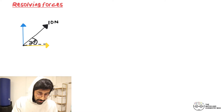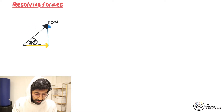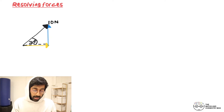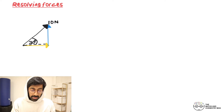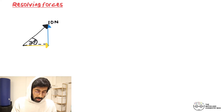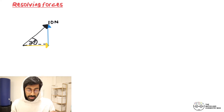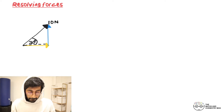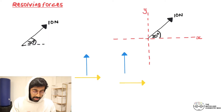Even if we took the blue arrow and moved it to the other side, it would be exactly the same. What we've created is called a vector triangle, where the yellow vector and the blue vector together give you the black one. So let's check out how we can resolve this — turn this 10 newtons into the two smaller forces.